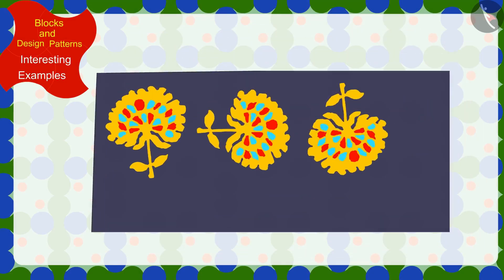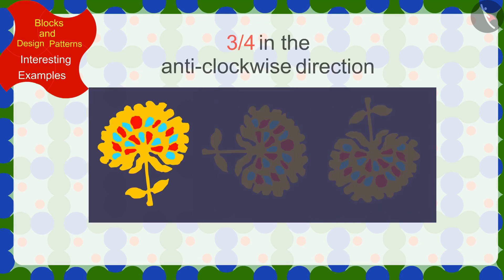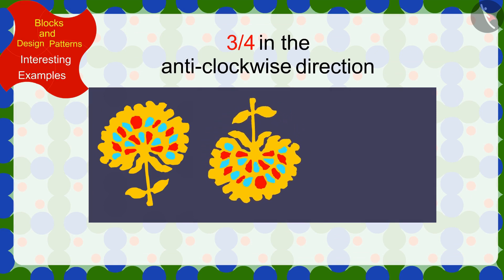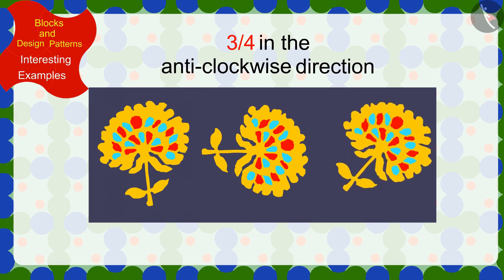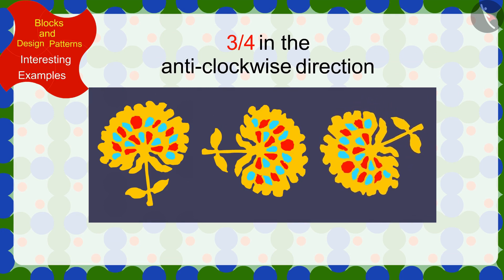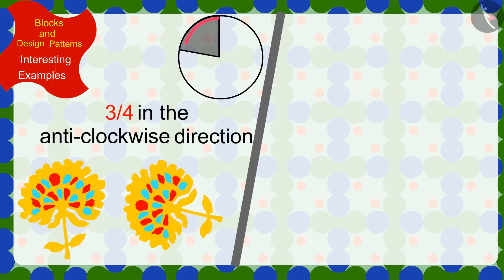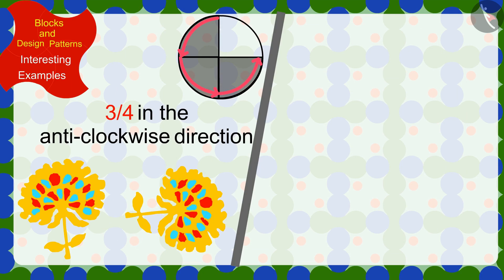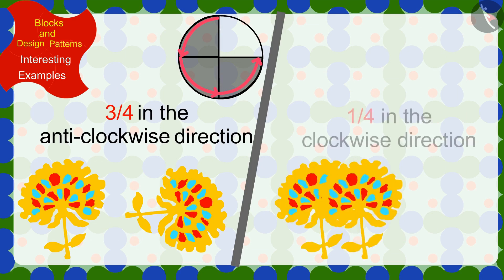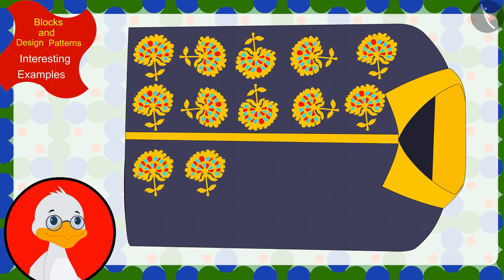If we look closely, we will find that this impression is made by rotating its previous impression three quarters in the anti-clockwise direction. In the same way, the impression made after it is made by rotating this impression three quarters in the anti-clockwise direction. Wow! You found the rule — it rotates the previous impression three quarters in the anti-clockwise direction, or one quarter in the clockwise direction, every time.